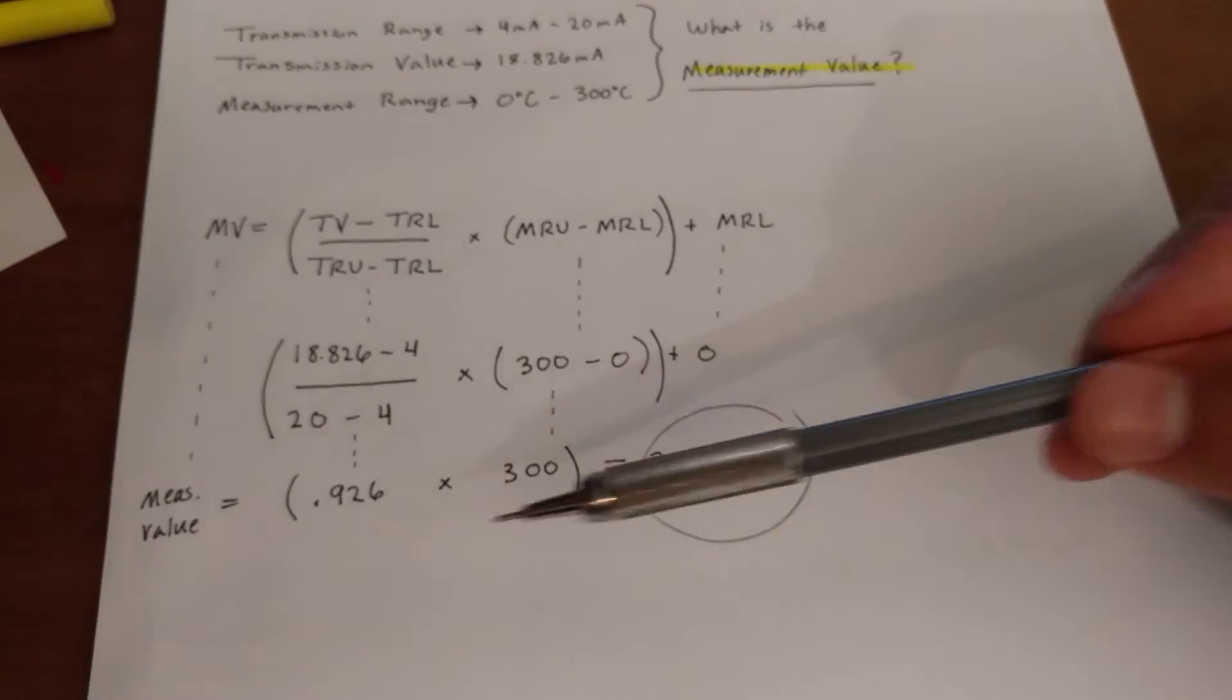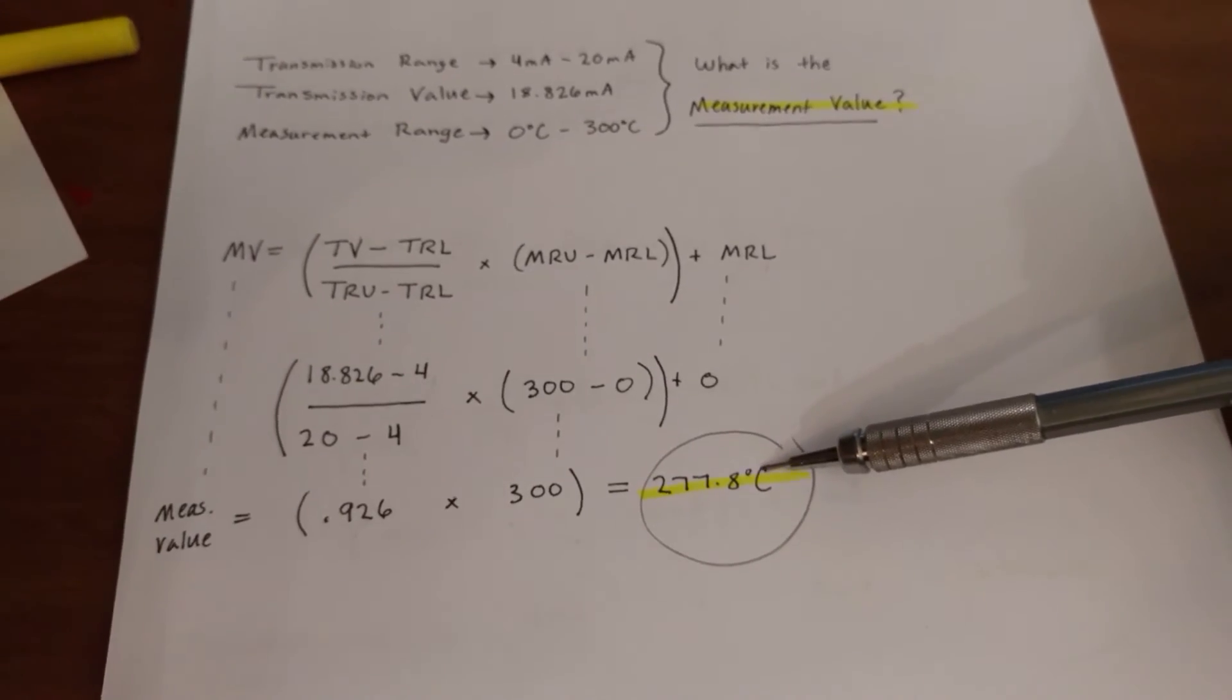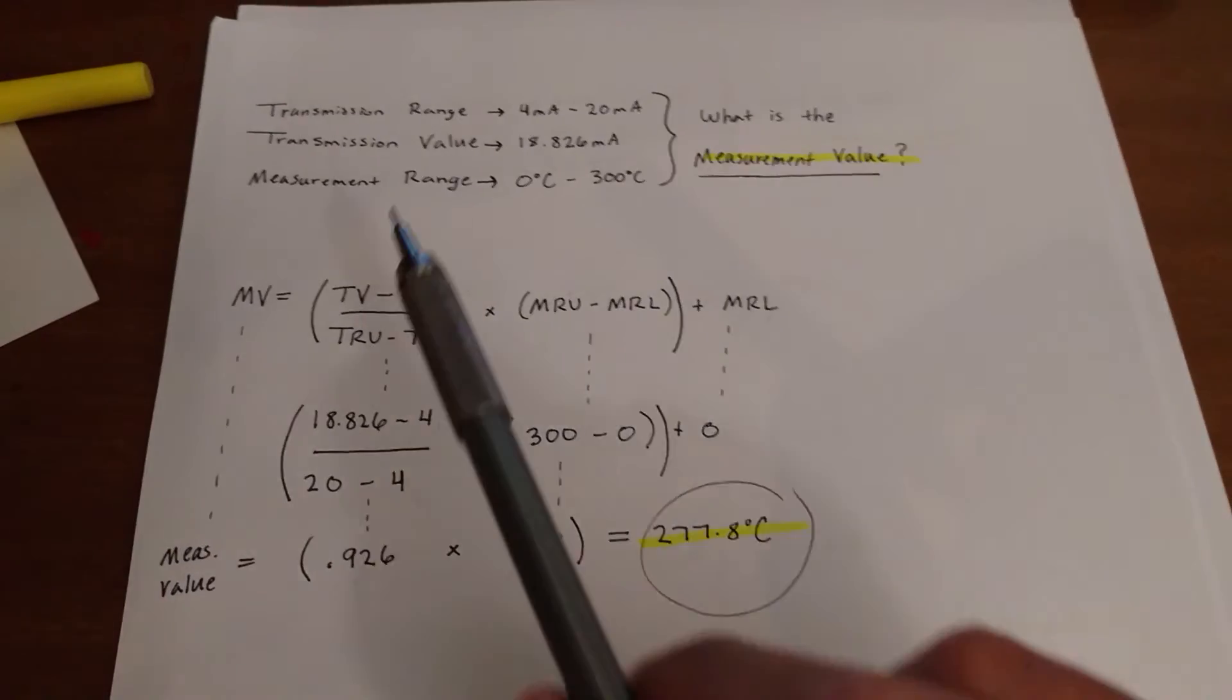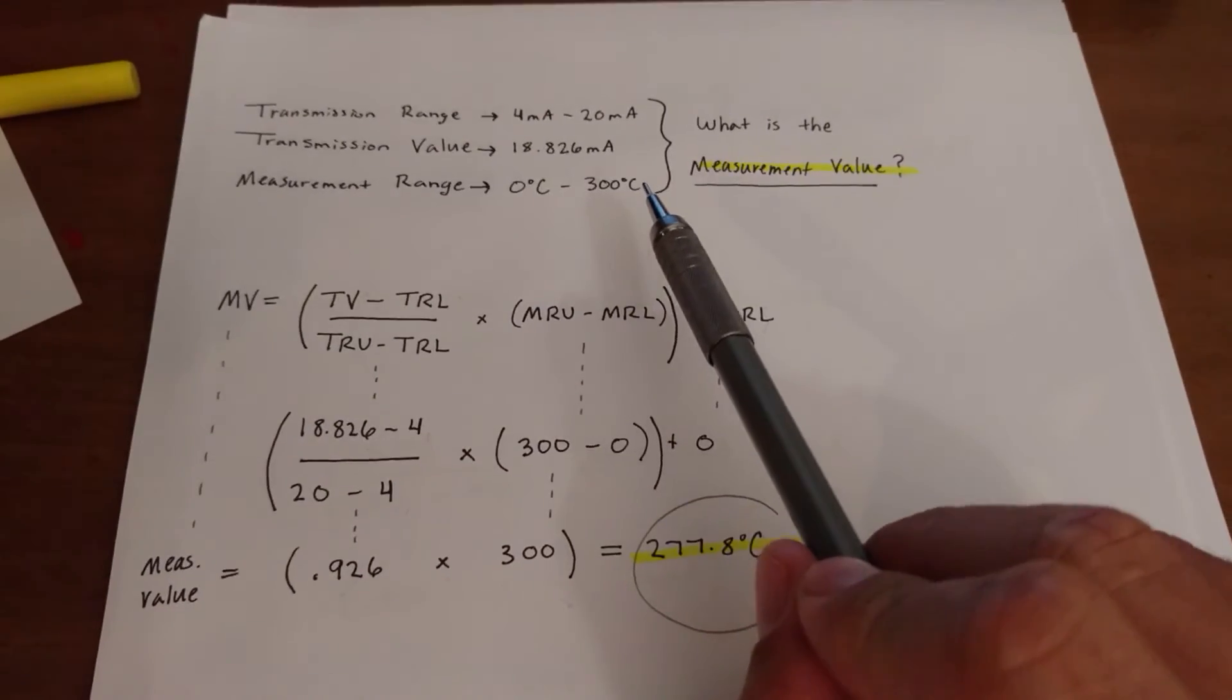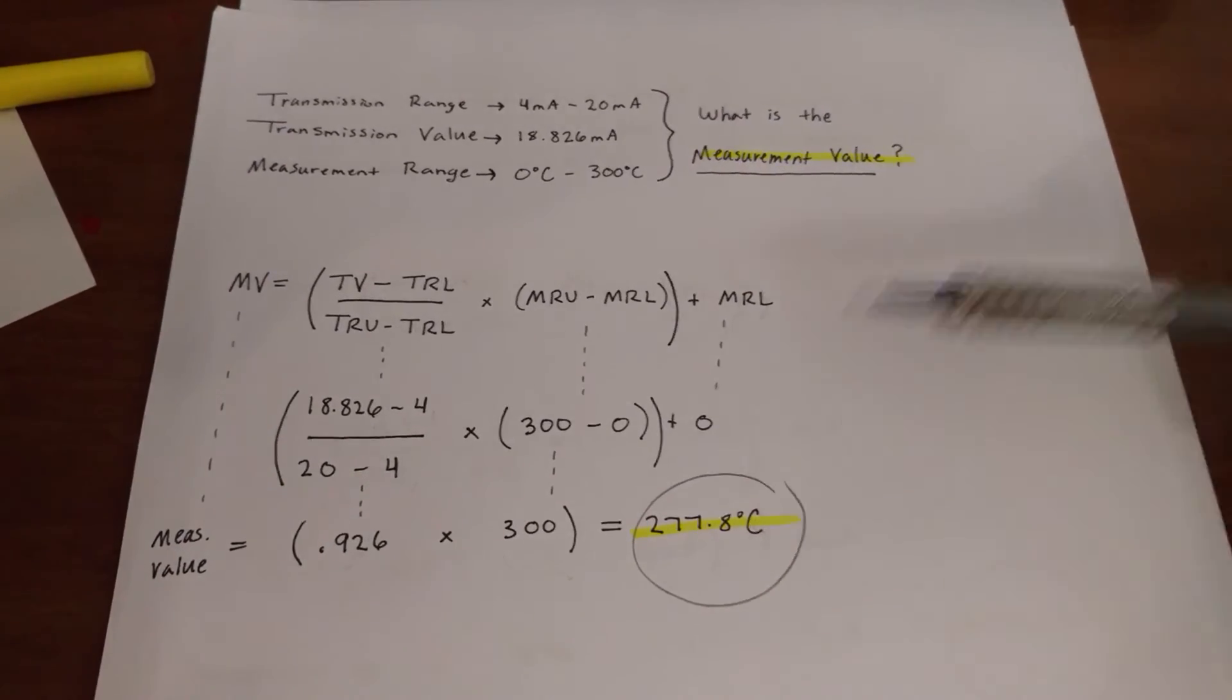Okay, so once you do that, you're going to get 277.8 degrees Celsius. And you know that it's going to be in degrees Celsius because you're looking for your measurement value and your measurement range is in degrees Celsius. So that's how I remember to know that I'm using the correct description here.